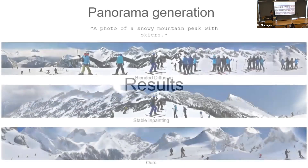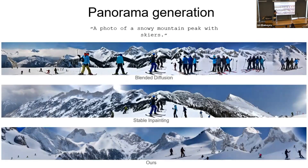Jumping to the results presented in the paper: for panorama generation, we compare to two baselines. One is Stable Inpainting, which was fine-tuned for the inpainting task on large-scale data. The other is Blended Diffusion, which uses the model's prior but was also specifically tailored to inpainting. Both works operate sequentially — starting from a central crop and extrapolating to the sides. You can see they produce patching inconsistencies and lack diversity, whereas our method produces diverse and seamless panoramas.